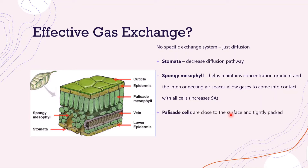Then we have our palisade cells, which contain our chloroplasts and are close to the surface of the leaf. This is because we need these cells to get the most sunlight. They're also tightly packed, meaning there are more chloroplasts at the top of the cell for more sunlight energy to be absorbed for more photosynthesis.